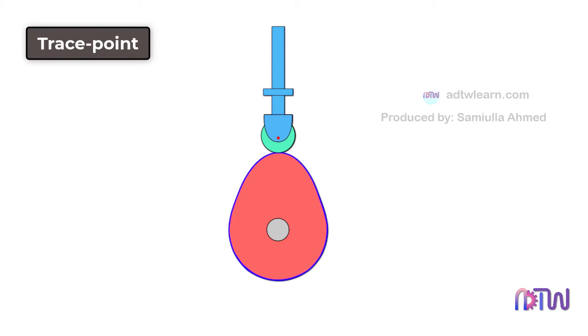Trace Point: A trace point is a theoretical point on the follower. Its motion describes the movement of the follower. For roller followers, this point of the follower is called the Trace Point.